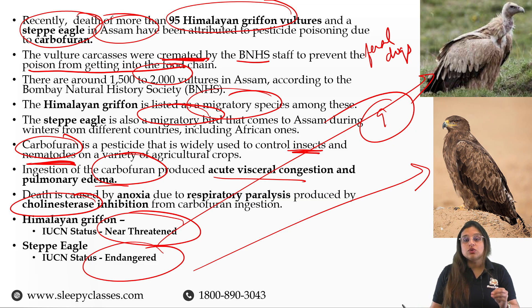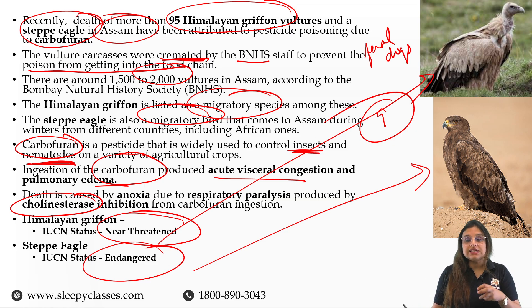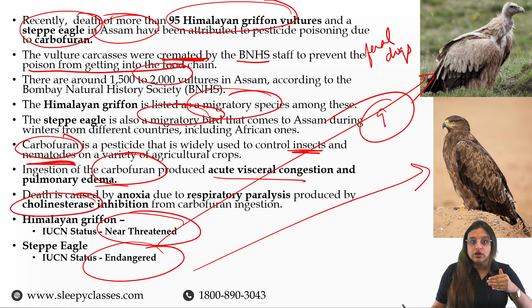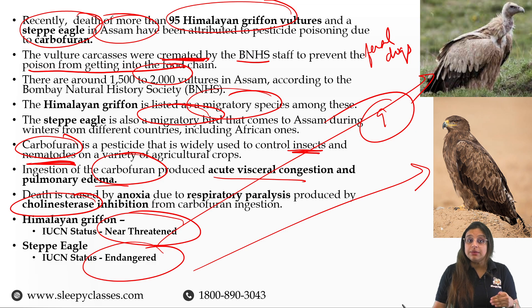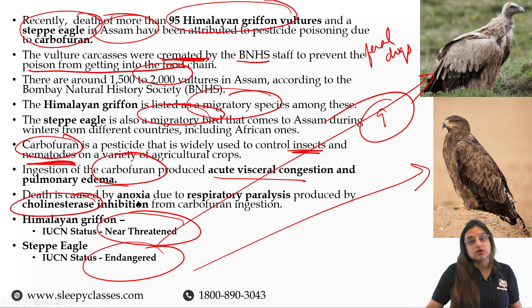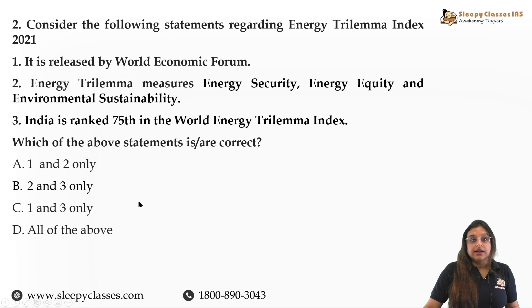Carbamates and organophosphates are both anti-cholinesterase pesticides, because cholinesterase is a very important enzyme in our body and these chemicals inhibit it. So that was regarding Carbofuran.